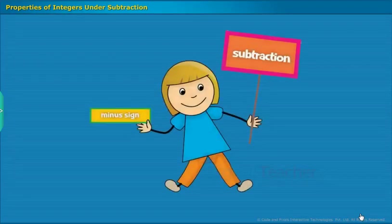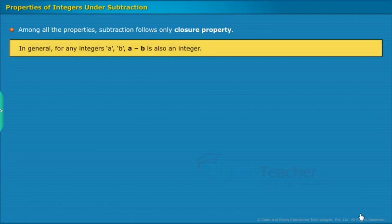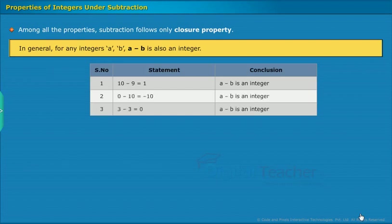Here we will learn about the properties of integers under subtraction. Among all the properties, subtraction follows only closure property. Closure property defines that for any integers a and b, a minus b is also an integer. For example: 10 minus 9 equals 1, which is an integer. The same holds for the second and third statements. Therefore, the table follows closure property under subtraction.